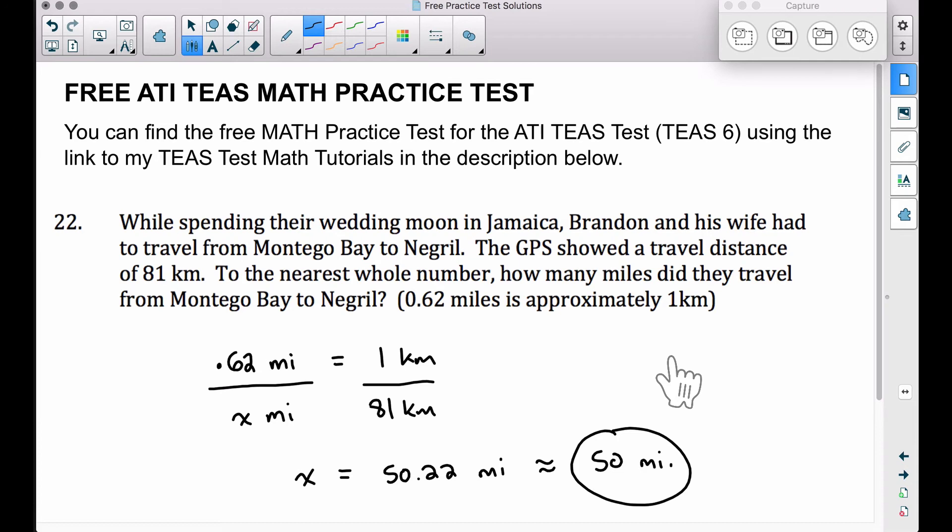But yes, a fast way to do this one, since we know that 0.62 miles is approximately one kilometer, and we have 81 kilometers, we can take 0.62 times 81, we get the same answer. And as a matter of fact, that's exactly what we did right here. We took 0.62 times 81, we got this, and then x times one is just x. So we have our answer.